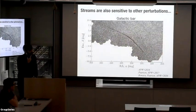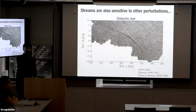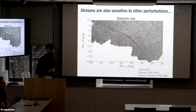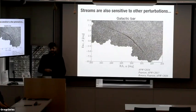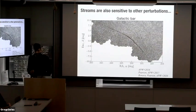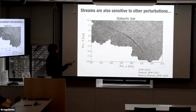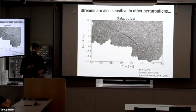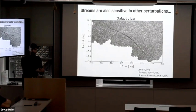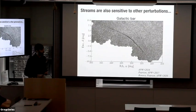I think this mass range — ten to the six to ten to the eight solar masses or so — is going to be one of the most interesting ways we can use streams to constrain effective models for dark matter. Now, what are the complications? Tomorrow I'm going to talk about that in a lot more gory detail. Today I just want to flash a couple of things that might be sticks in the side of that story — things that can also affect the density evolution of streams.